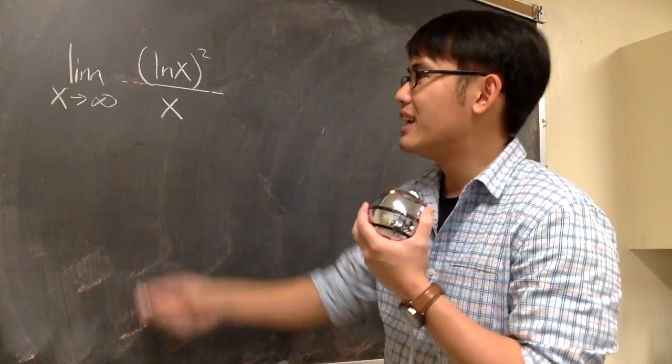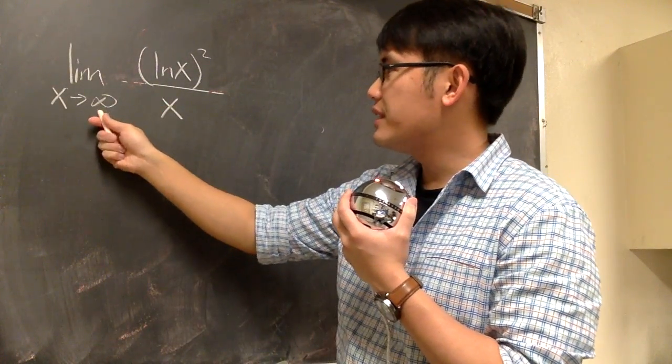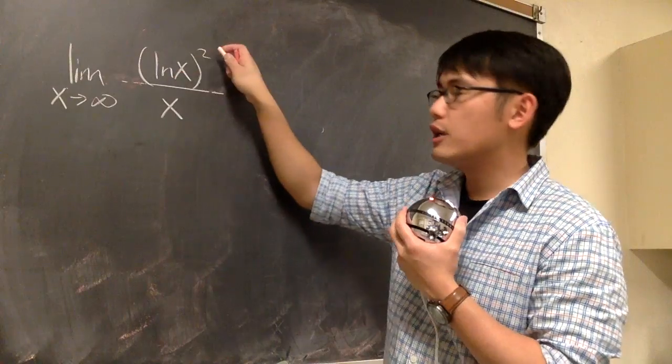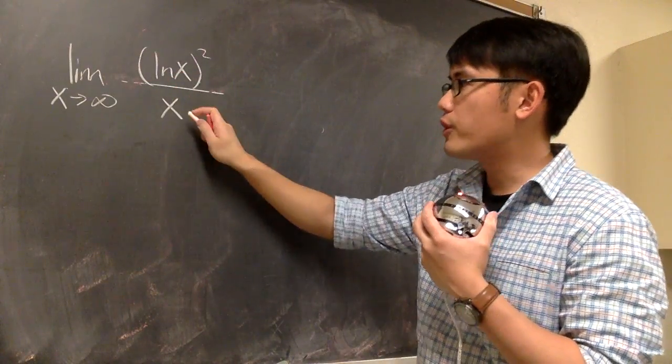Let's take care of this limit. The limit as x goes to infinity, parentheses ln x, raised to the second power, over x.